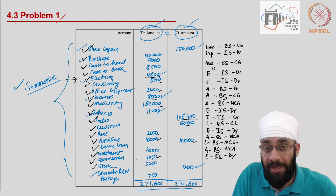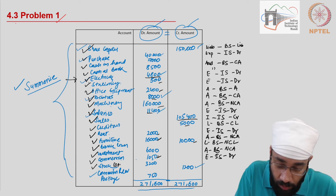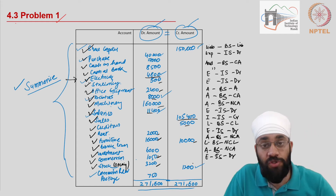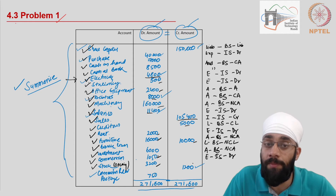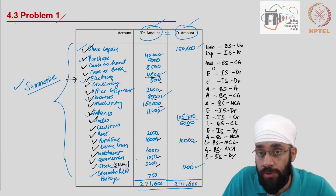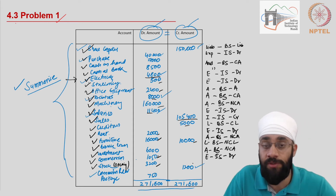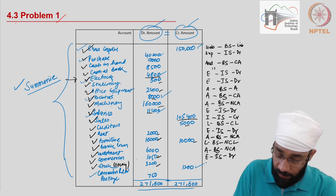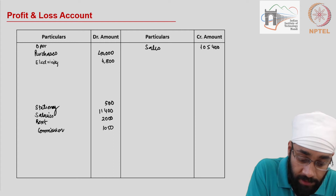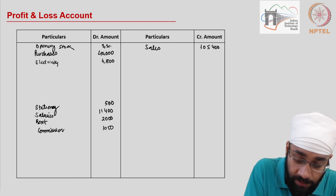Then you have stock — this is the stock at the beginning, the opening stock, at 3,200. This is going to be sold during the year, so it's equivalent to a purchase. The stock left from last year will be used to sell goods this year, so it becomes an expense. We're going to treat this as an expense in the income statement on the debit side — opening stock 3,200.